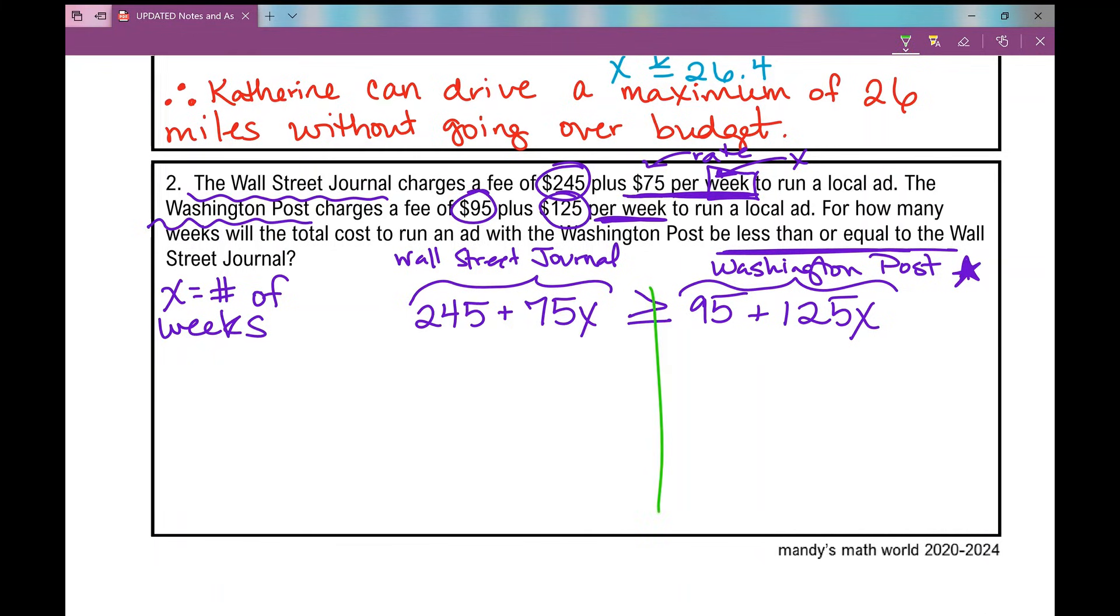I'm going to draw a line down my inequality, and I'm going to get my variables on one side. So I'm going to do that by subtracting 125X from both sides. I'm kind of going backwards, but that's what I get. 245 minus 50X is greater than or equal to 95. And then I'm going to subtract 245 from both sides. And I get negative 50X is greater than or equal to negative 150.